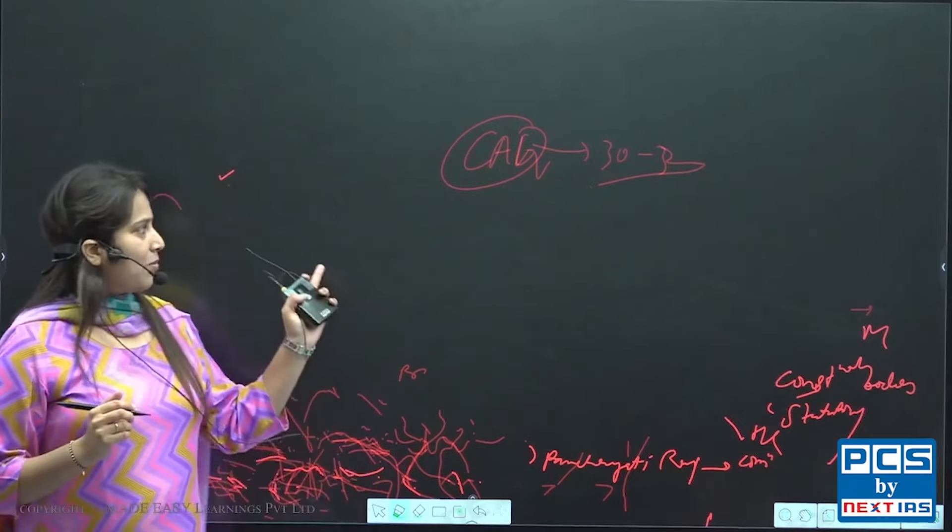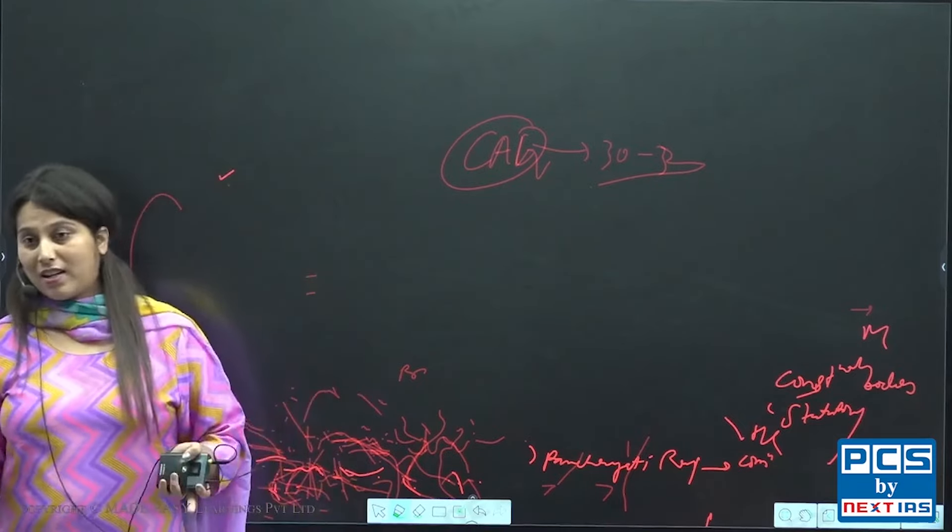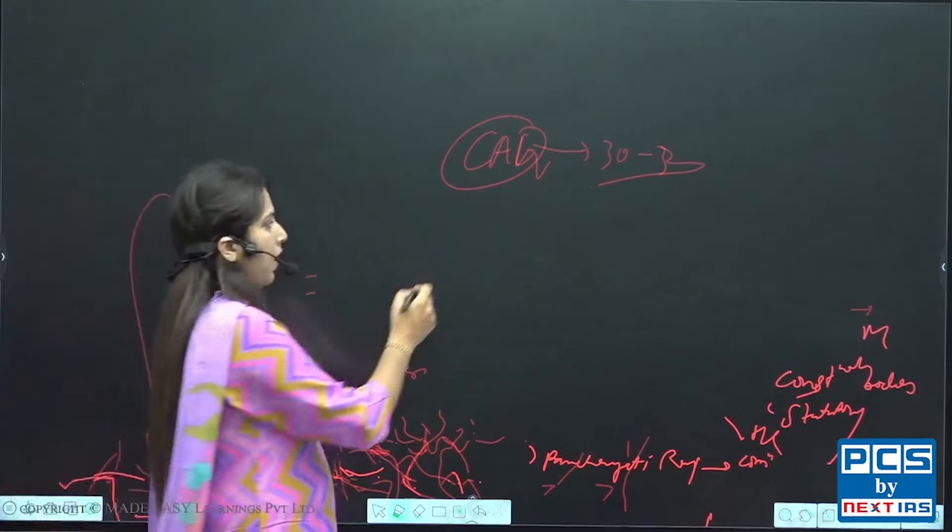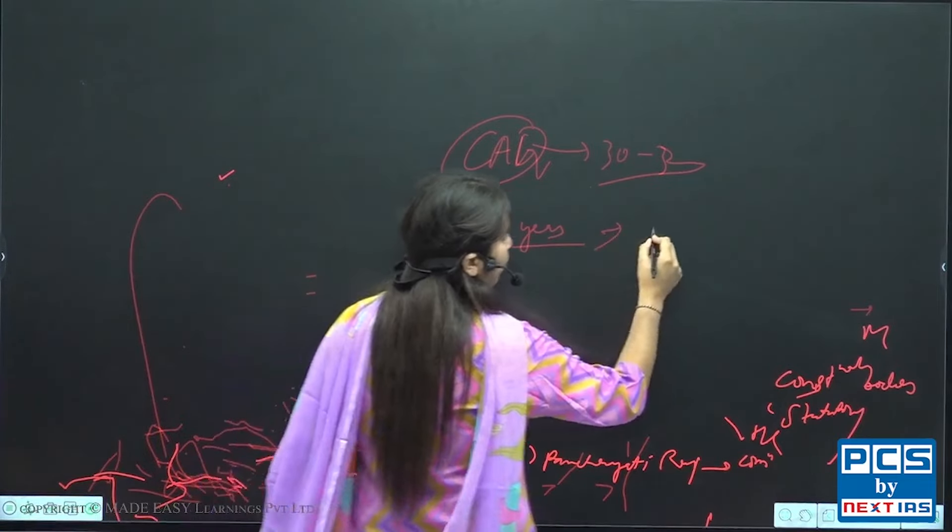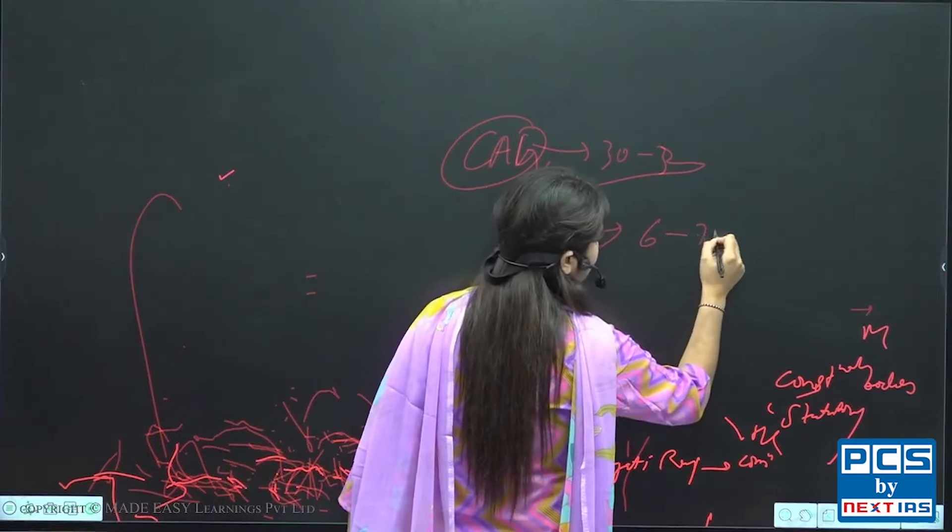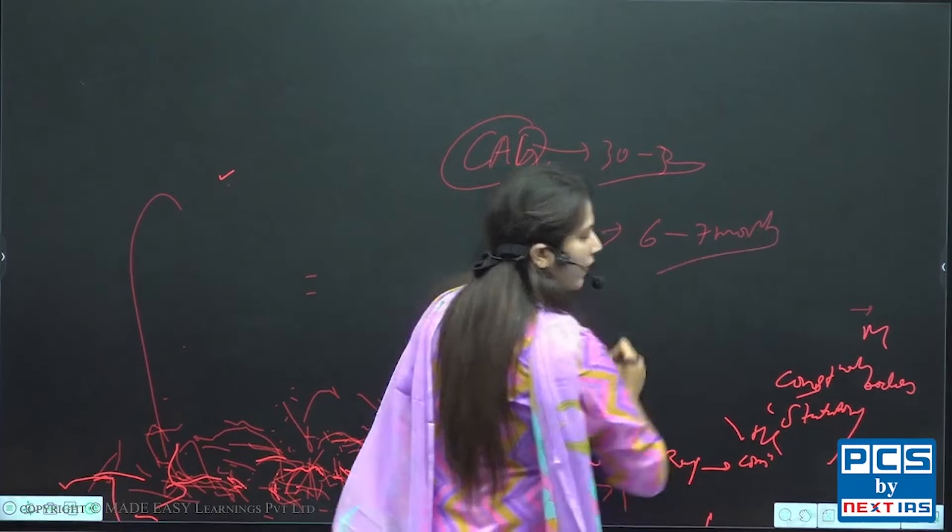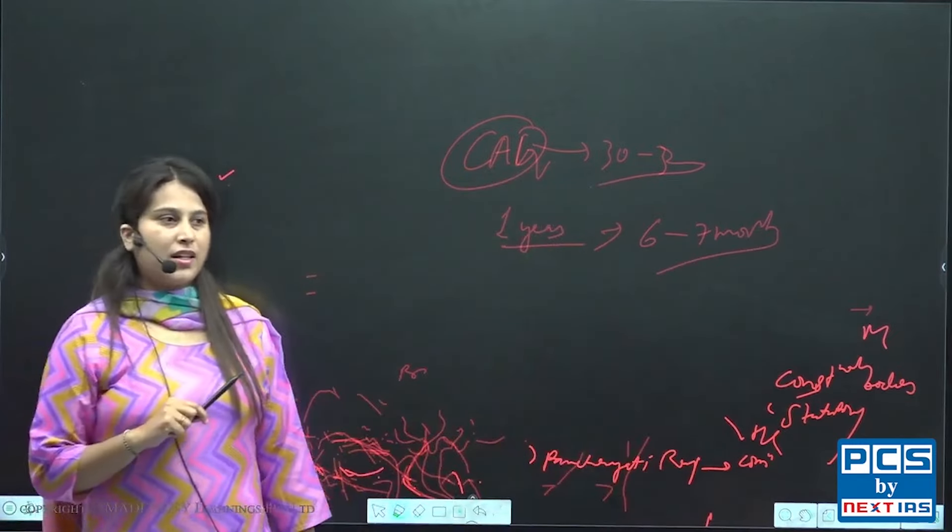So if you look at current affairs, you will say, how many current affairs are, what do you want to do? One year current affairs, with more focus on the last 6-7 months. You should do the current affairs in the last 6-7 months.